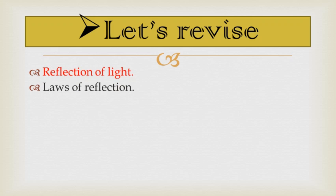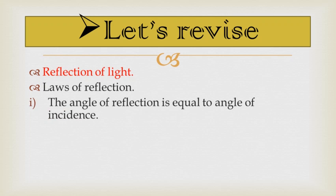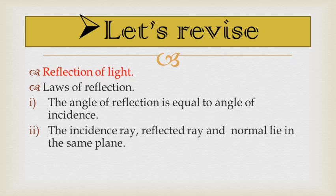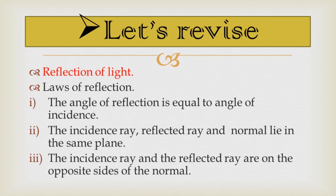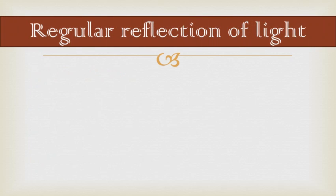Next, we covered the three laws of reflection. First, the angle of reflection is equal to the angle of incidence, meaning r equals i. Second, the incident ray, reflected ray, and normal lie in the same plane. Third, the incident ray and the reflected ray are on the opposite sides of the normal.